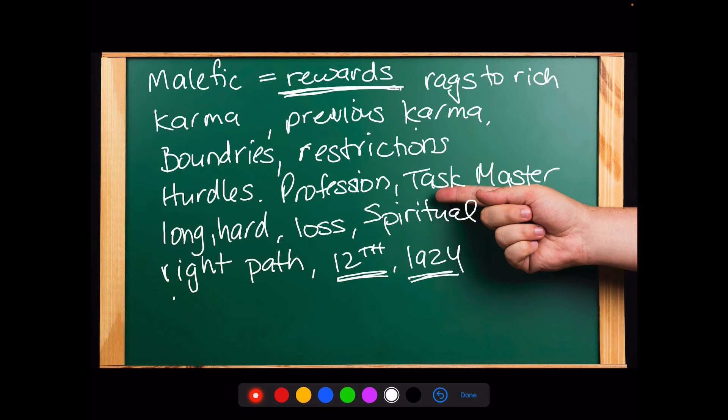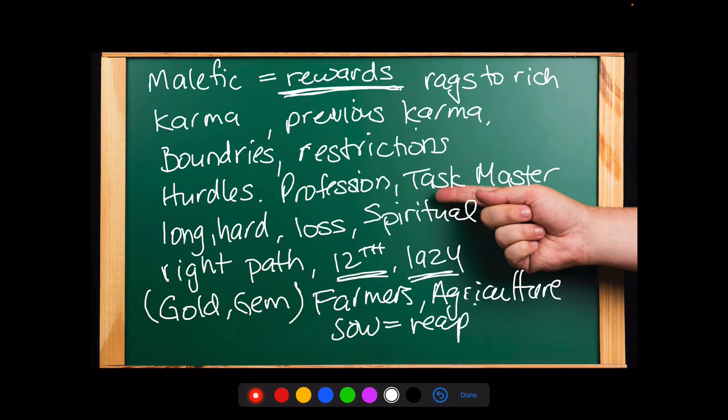And if we're talking about that, then we're talking about gold and gems. They take a long time to form. They take a lot of pressure to form. And they're represented by Saturn for that reason. And also farmers, they actually, agriculture. Now they basically sow what they reap. Again, that's karma for you. And Saturn is all about karma.